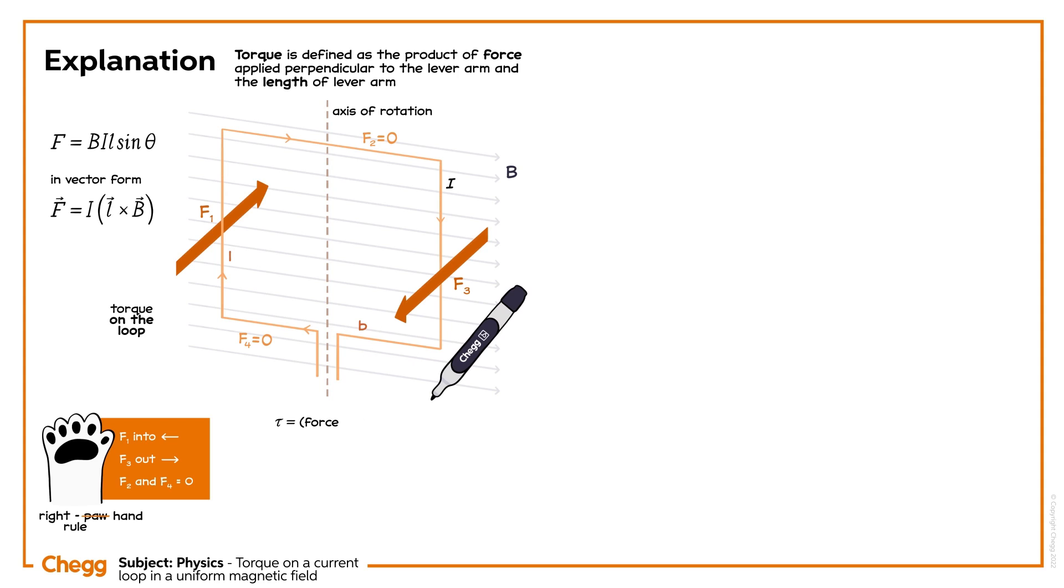torque is equal to force times perpendicular distance between the forces. Thus, torque is equal to bil times b, or torque is equals to bi times lb.